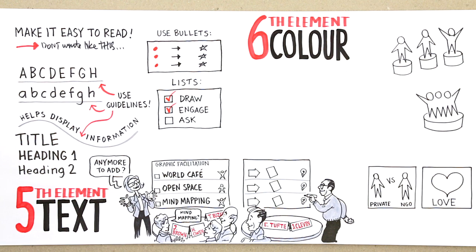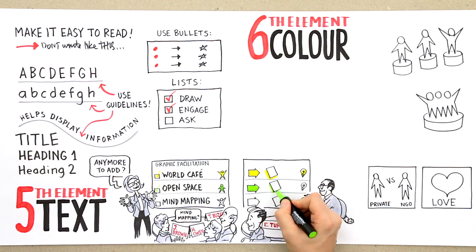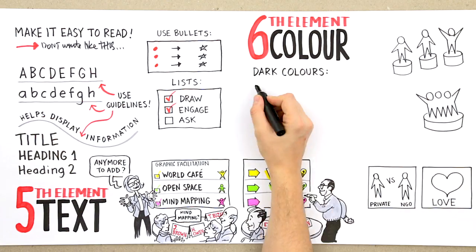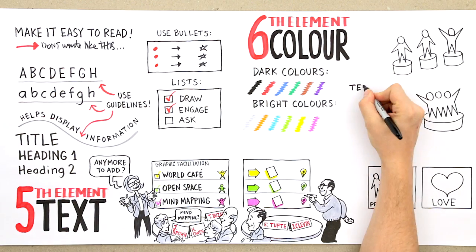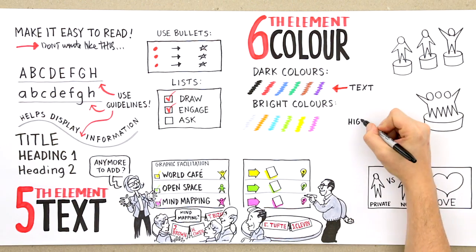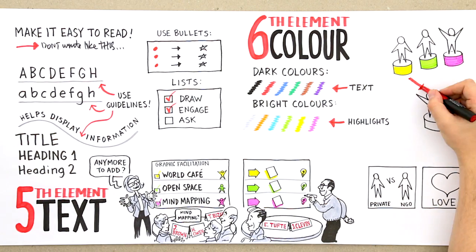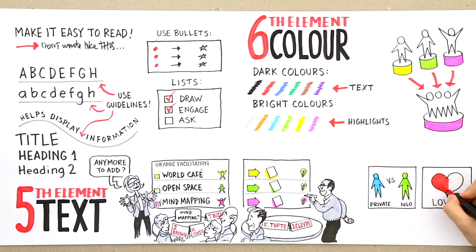Element 6: Colour. Colours help us navigate the information we see. Use colour to make things stand out, show relations and add energy. Dark colours are great for text. Bright colours are great to highlight with. Colours can add meaning to a simple illustration and add depth to a story.